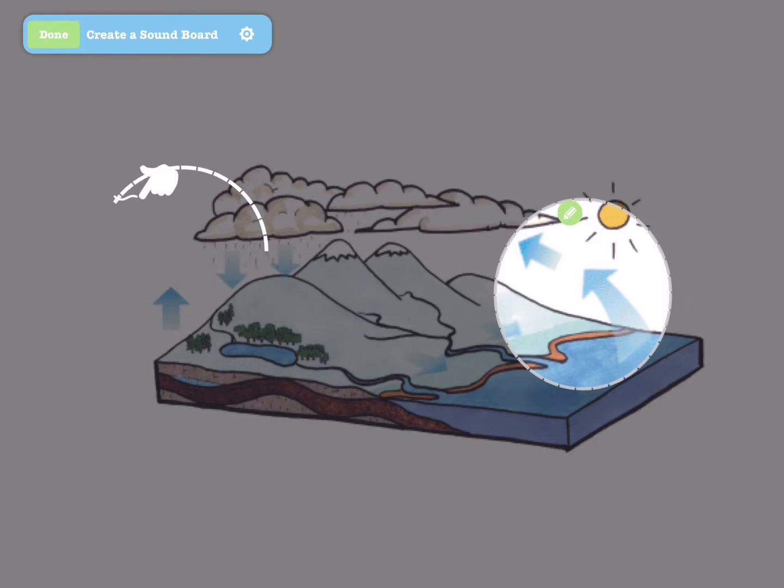Depending on the nature of your soundboard, the audio could be translations or definitions in a language vocabulary lesson, labels on a diagram such as this one, or even sound effects for musical instruments or animals. In this demo, we'll label the different parts of the water cycle.